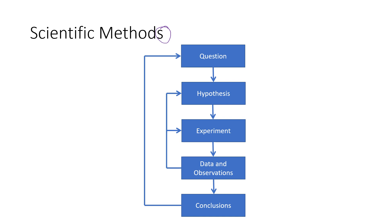You might start off with some sort of a question, which may be based on something you observed in nature or in the lab during an experiment — something unexpected that makes you wonder what's going on. Then you create a hypothesis about that question. Often these hypotheses are formalized as if-then statements, for example: if I increase the temperature, then this reaction will go faster. Then you go and do an experiment designed to test that hypothesis.